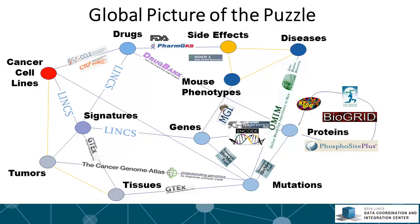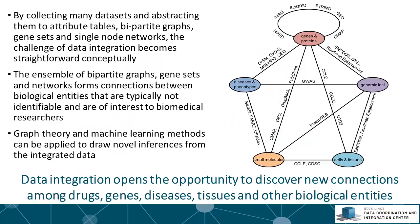The ensemble of bipartite graphs, gene sets, and networks allows us to form connections between biological entities that typically are not identifiable by standard methods. Those could be of great interest to biomedical researchers because they can identify interesting relationships not obviously found when looking at one data set alone. Graph theory algorithms and machine learning methods can now be applied to draw novel inferences from this integrated data, opening opportunities to discover new connections among drugs, genes, diseases, tissues, and other biological entities.